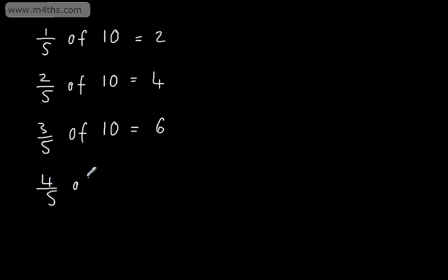4 fifths of 10, we divide by 5 and multiply by 4. Dividing by 5, as we see, gives us a 2. Multiplying by 4 gives us the 8.